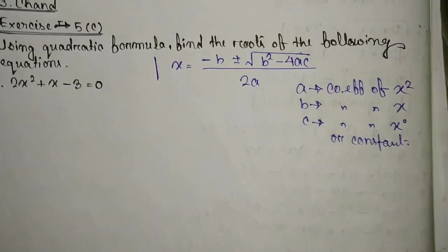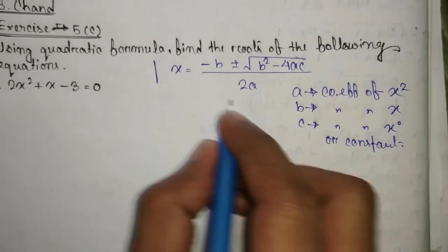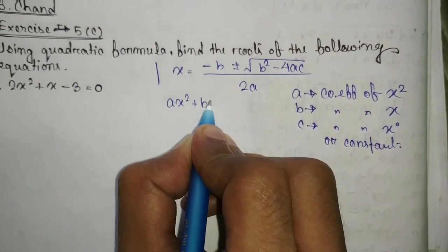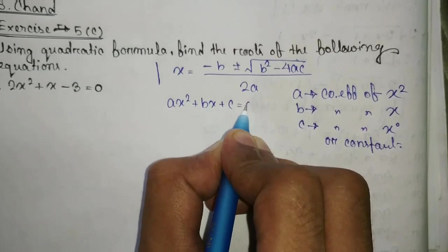and c is the coefficient of x to the power 0 or constant part. Now how do you get a, b and c? The ideal quadratic equation is ax square plus bx plus c equal to 0.